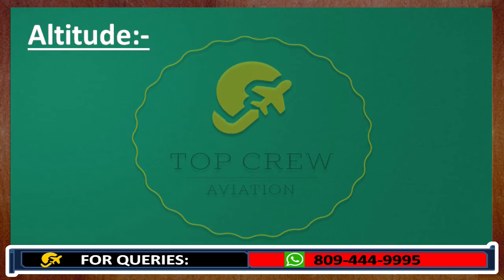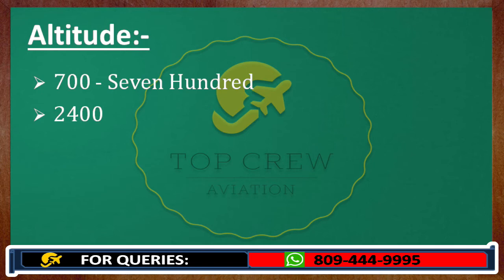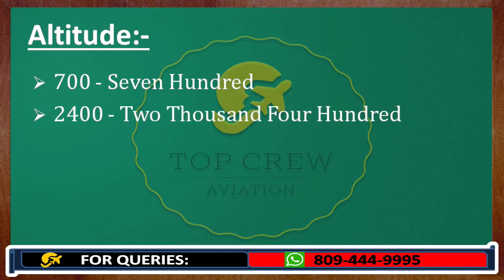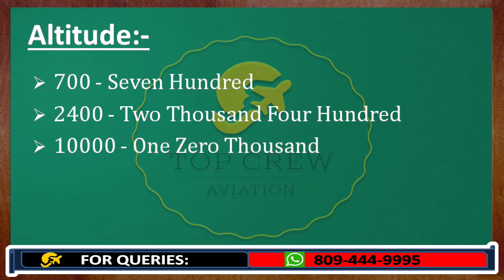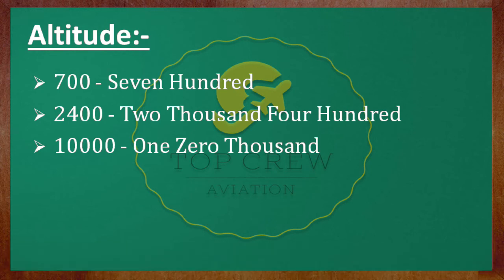Now altitude. Written 700, we would transmit 2400. Next example: 2400. Then 1000, 10000, 100000. This is how we have to transmit altitude.